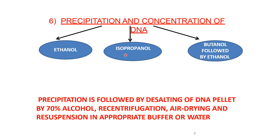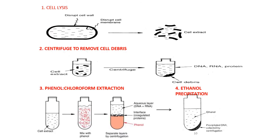Precipitation and concentration of DNA is done by precipitating with ethanol, isopropanol, or butanol, followed by ethanol precipitation. This is followed by desalting of the DNA pellet using 70% alcohol, recentrifugation, air drying, and resuspension in an appropriate buffer or water to concentrate the DNA.